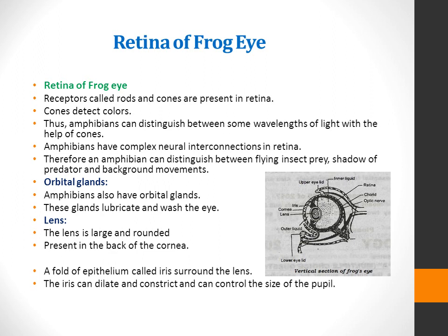Amphibians also have orbital glands which lubricate and wash the eye. The lens is large and rounded and is present behind the cornea. The iris can dilate and constrict to control the size of the pupil, and this also helps to focus light on the lens.